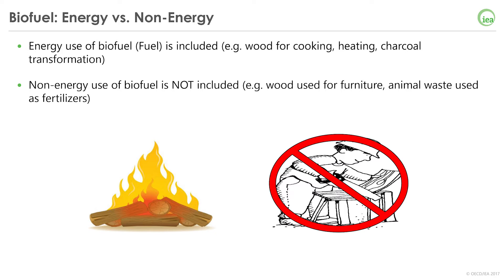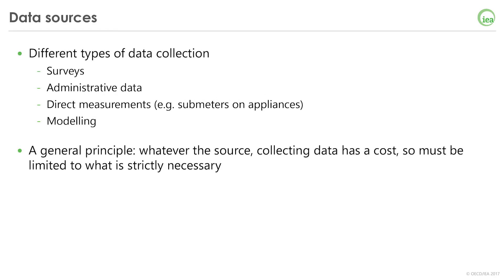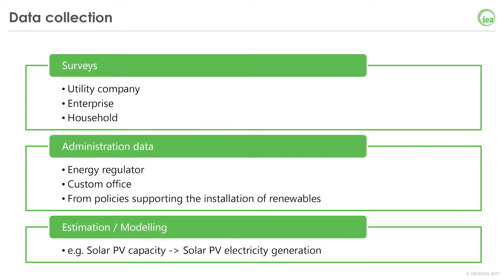Please note that we only collect energy use of biofuels. For example, if wood is used for furniture, we do not include this wood in our statistics. Now we will go through how countries collect renewable data. There are different types of data collection — countries can collect renewables data using surveys, secondary data, modeling, etc. The important thing is that, whatever the source, collecting data has a cost, so it must be limited to what is strictly necessary.